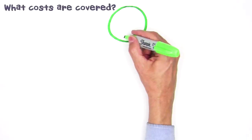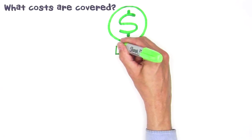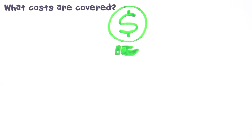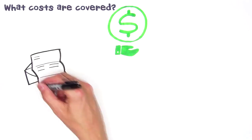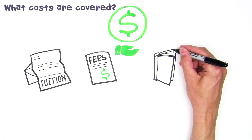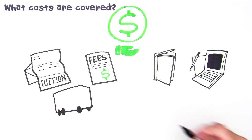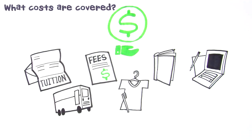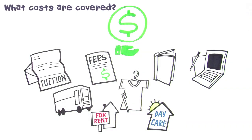What costs does a Pell Grant cover? Federal student aid, including Pell Grants, can be used to cover a variety of education costs. These can include tuition and fees, books, supplies, transportation and other personal expenses, living expenses such as room and board, and some dependent care costs, for example, daycare.